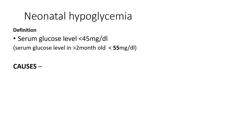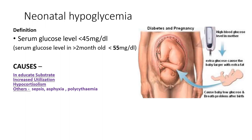The causes of neonatal hypoglycemia include inadequate substrate, where the neonate cannot get enough feed, and increased utilization, most commonly seen in infants of diabetic mothers. Until birth, the fetus receives continuous high glucose from the hyperglycemic mother, causing the fetal pancreas to secrete high insulin. After delivery, glucose supply cuts off but insulin levels remain high, causing hypoglycemia.